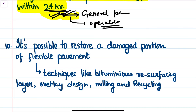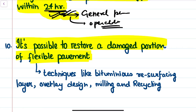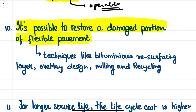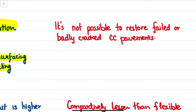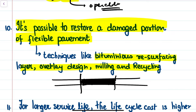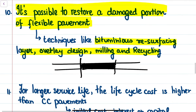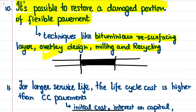The tenth difference is repairability: it is possible to restore a damaged portion of flexible pavement through techniques such as bituminous resurfacing, overlay design, milling, and recycling. If any section is subjected to potholes, rutting, or raveling, that portion is milled or overlaid. This is not the case with rigid pavement — when there is a defect, the whole slab of pavement typically has to be removed.